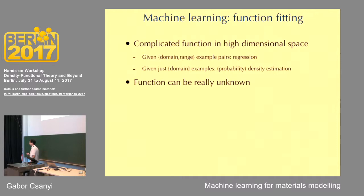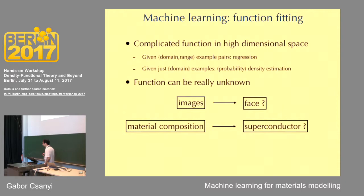In the majority of cases where you meet machine learning — as it grew up in the last 10 to 20 years — the function you're trying to fit is really unknown. You have no algorithm to compute it. For example, if I show you an image, is it a face? That function, which tells you it's one if it's a face and zero if it isn't, operates on the space of images — a million-dimensional space for a thousand-by-thousand-pixel image. No one has an algorithm to compute that function exactly. So that's an example of machine learning: learning from examples.